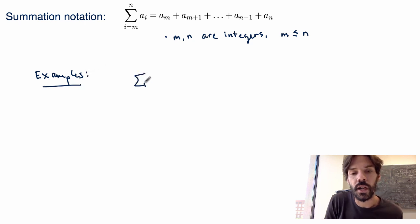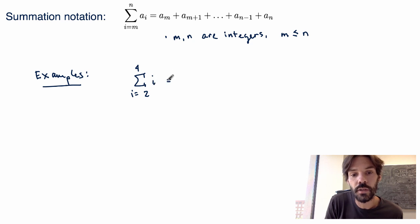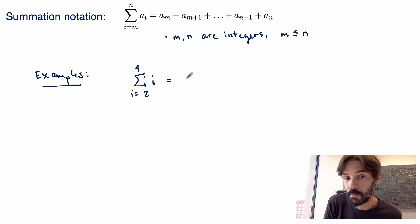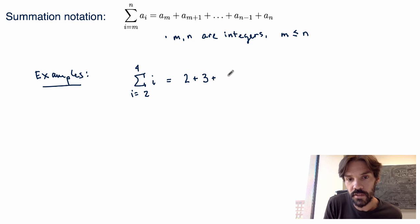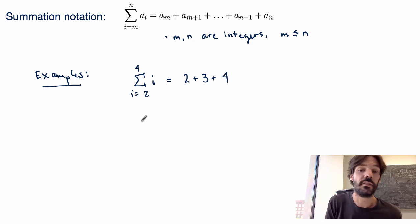For example, if I write the sum from i equals 2 to 4 of i, that means I'm evaluating this coefficient from 2 to 4 and summing up. I get first i equals 2, so 2, plus the same thing at i equals 3, plus the same thing at i equals 4. So this is exactly what this expression means.